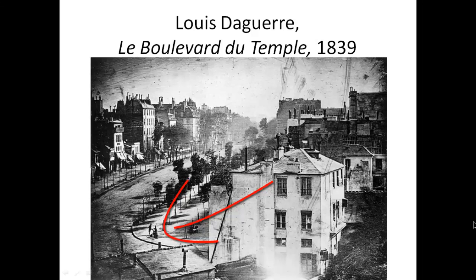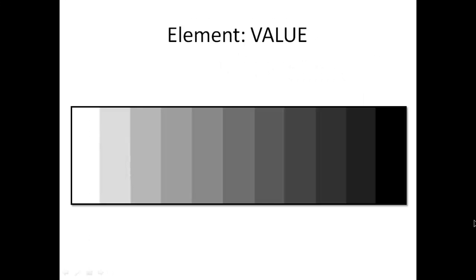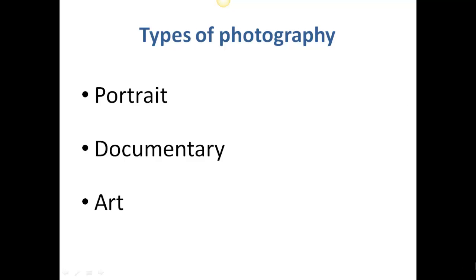However, there were two people who were still long enough — the shoe shiner and his customer. Because early photographs were only in black and white, or more correctly in light and dark, the visual literacy element of value was very important. Photographers strived to have a range of different values in each of their works, so they would have a nice range of lights, middle grays, and darks, which creates contrast and interest in each image.